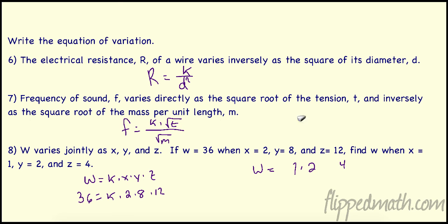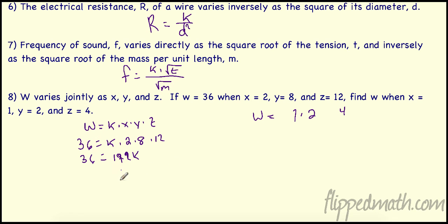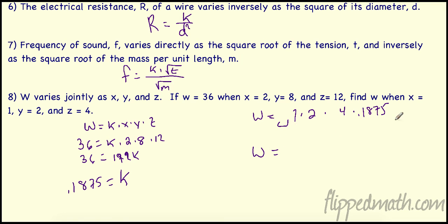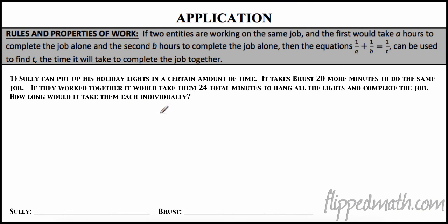W is 36 when x is 2, y is 8, and z is 12, and we need to find w when x is 1, y is 2, and z is 4. So 36 equals 2 times 8 times 12, which is 192k. Divide to get k equals 0.1875. Now plug that k in with x equals 1, y equals 2, z equals 4, multiply all those out, and we get w equals 1.5.